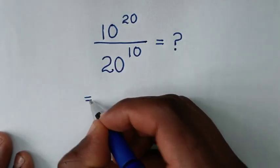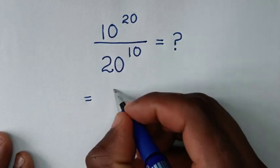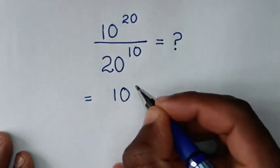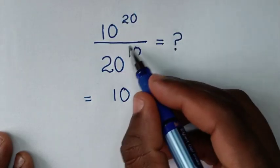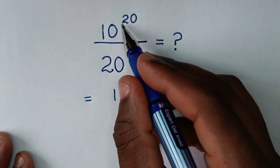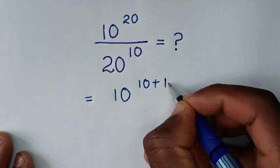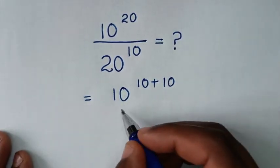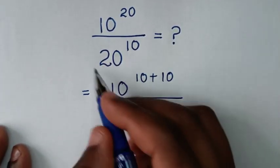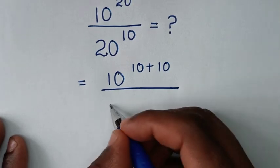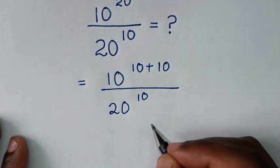So it will be equal to — from here in the numerator, 10 power of 20. To have a common base of 10, 20 is the same as 10 plus 10, then over this exponent of 20 power of 10.